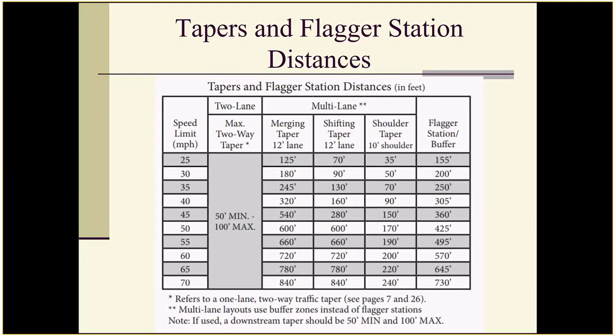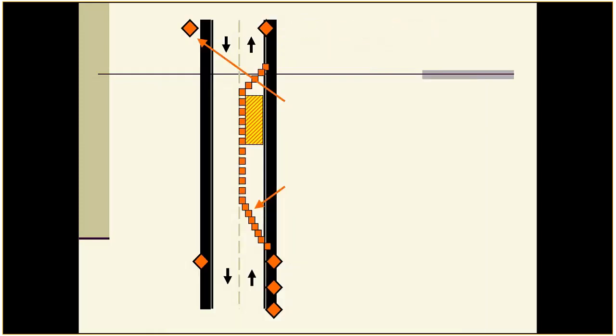On a two-lane road, the cone taper length is a 50-foot minimum to 100-foot maximum, regardless of speed. The cones are closer together in the taper than anywhere else. As the motorist approaches, it appears to be a wall of cones across their lane, which really makes them slow down.